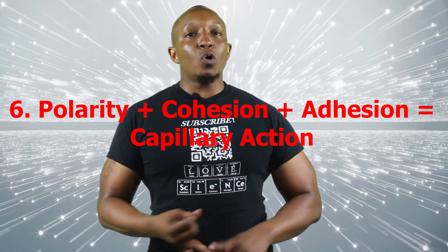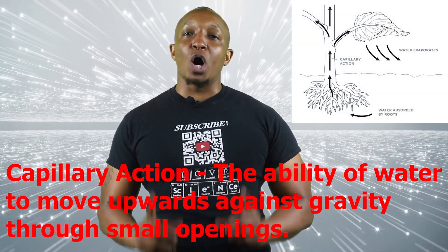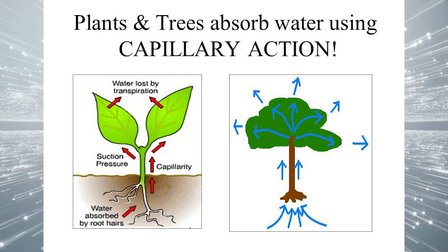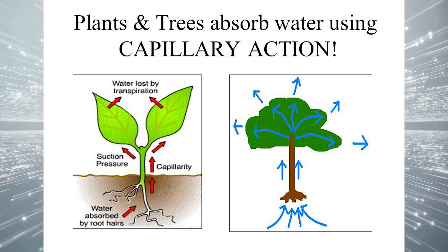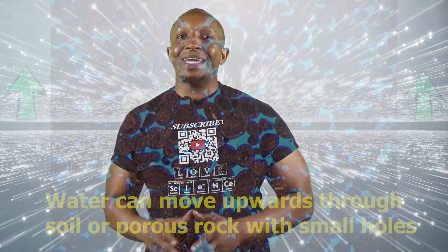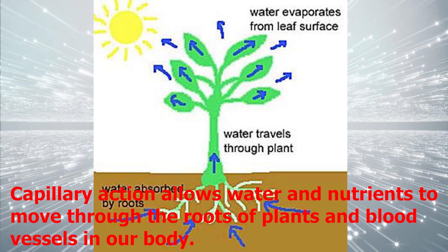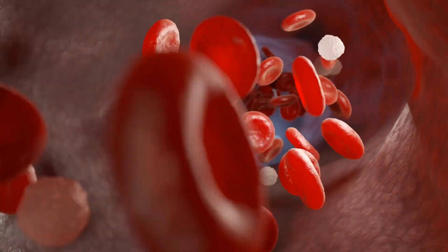Number six: the properties of polarity, cohesion, and adhesion all work together to create capillary action. Capillary action is the ability of water to move upward against gravity through small openings. As water molecule number one starts climbing, it pulls along water molecule number two, which drags water molecule number three, which drags along water molecule number four, and so on. For example, water can move upward through soil or porous rock that has many small holes in it. Capillary action is extremely important for living organisms — it allows water and dissolved substances to move through the roots of plants and through the tiny blood vessels in our bodies, helping deliver important nutrients throughout our bodies and other organisms' bodies as well.